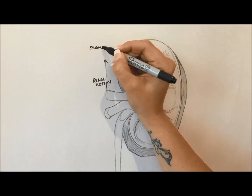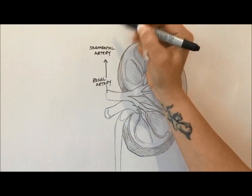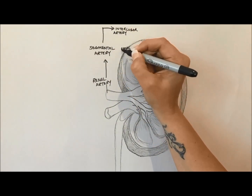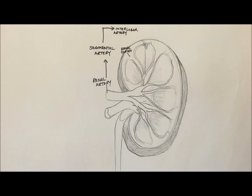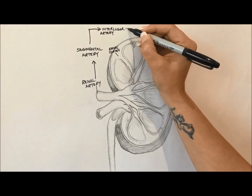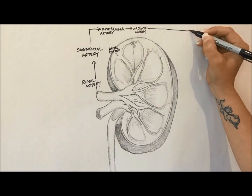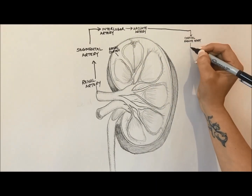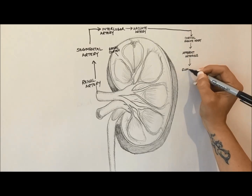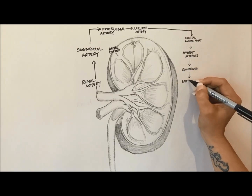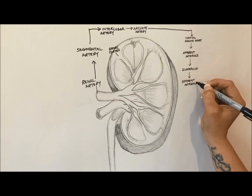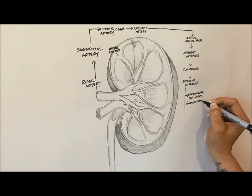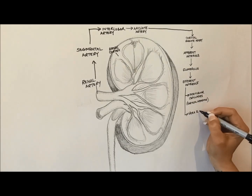The kidneys do the major work of the urinary system and they are literally a powerhouse of activity, actually having a higher blood flow than the brain, liver, or even the heart. In the following presentation, we will look at the path of renal blood flow through a healthy set of kidneys and in a condition known as multicystic dysplastic kidney disease.